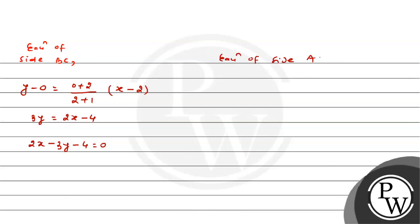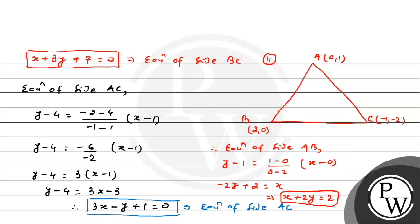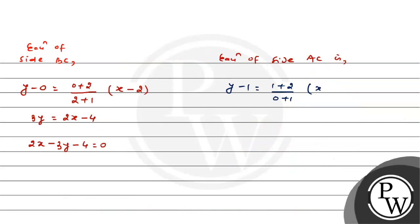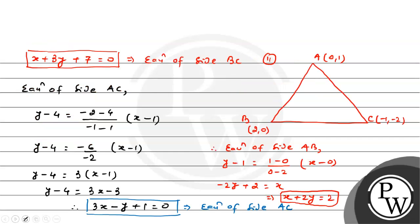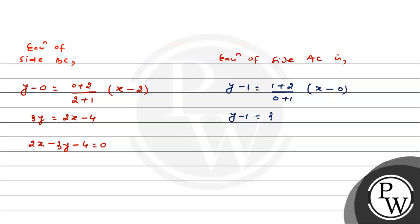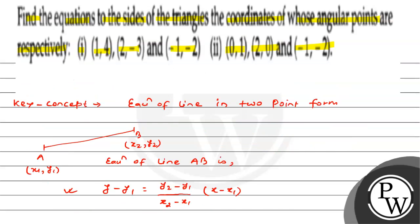Equation of side AC with A(0,1) and C(-1,-2): y minus 1 equals (1 plus 2) by (0 plus 1) into (x minus 0), giving y minus 1 equals 3x. So 3x minus y plus 1 equals 0. Checking (0,1): 0 minus 1 plus 1 equals 0. And (-1,-2): -3 plus 2 plus 1 equals 0. Correct. These are the equations of the sides of the triangles whose vertices are (1,4), (2,-3), (-1,-2), and (0,1), (2,0), (-1,-2). Hope you have understood it well.